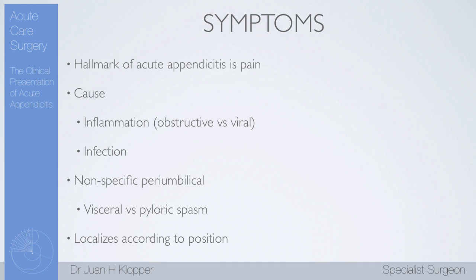There's some research suggesting that it might just be pyloric spasm, which is very common in any kind of bowel disease. You might get it early on in colon cancer, in diverticular disease such as diverticulitis, and it is the pyloric spasm that causes the initial non-specific peri-umbilical pain. So there are different ways to look at this as well.